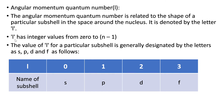The angular momentum quantum number l has integer values from 0 to N minus 1. The value of l for a particular subshell is designated by the letters S, P, D, and F. If l=0, the subshell is S; if l=1, the subshell is P; if l=2, the subshell is D; and if l=3, the subshell is F.